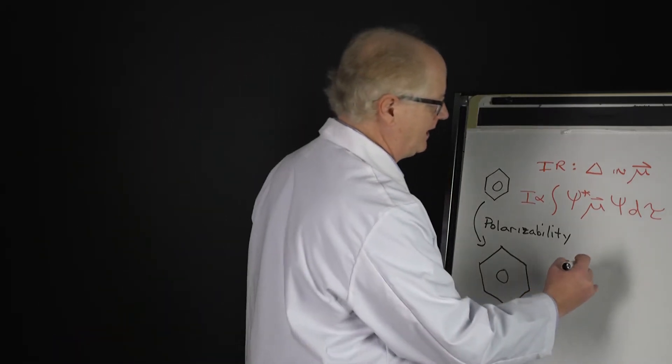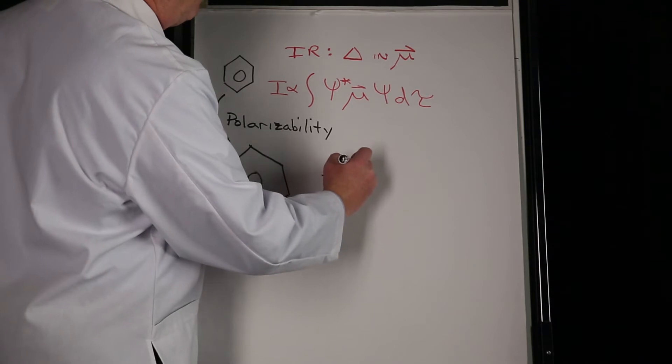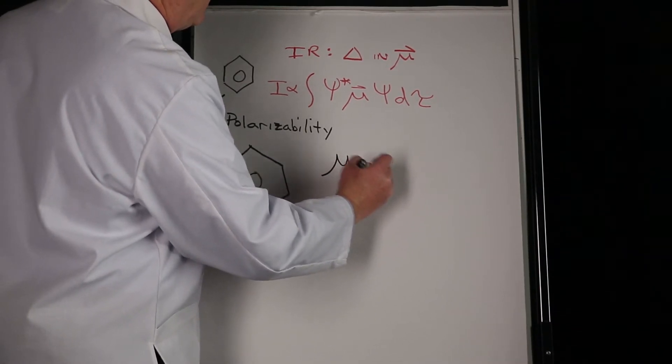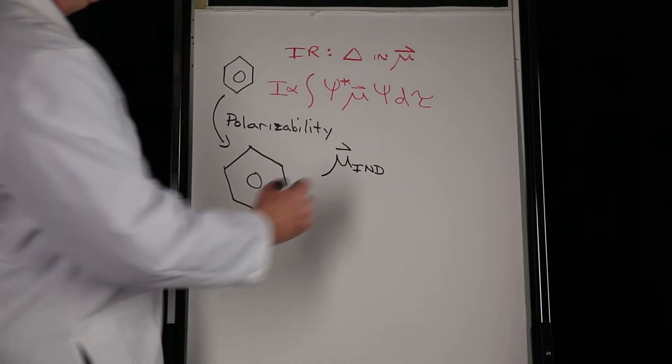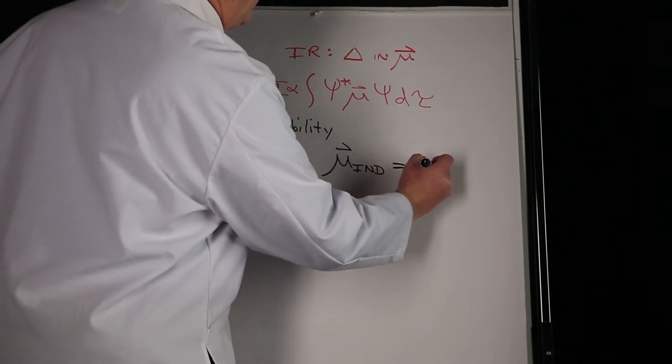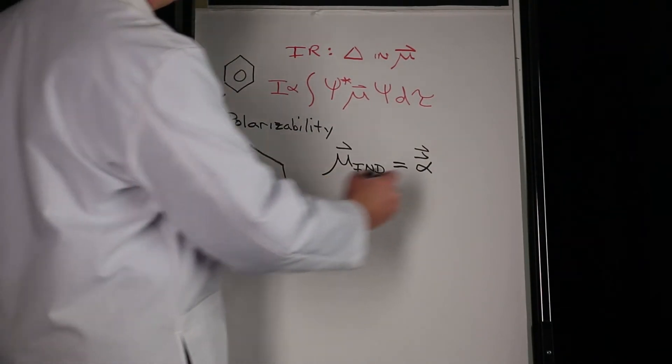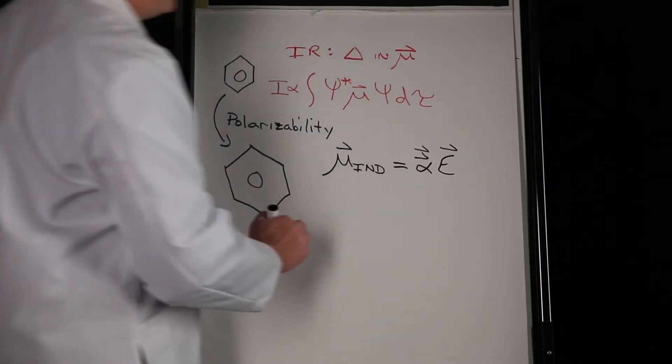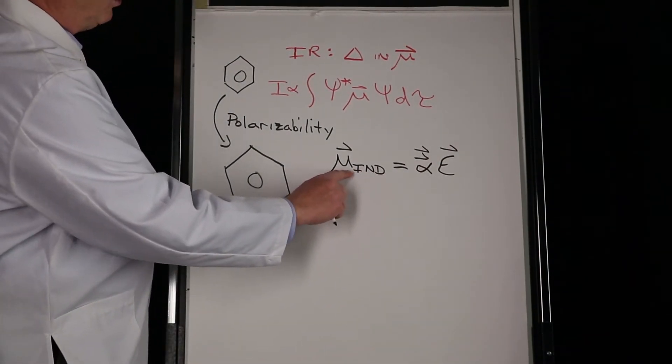The way that's written is: μ_induced = α·E, where the induced dipole equals alpha (which is a tensor) times E, the electric field.